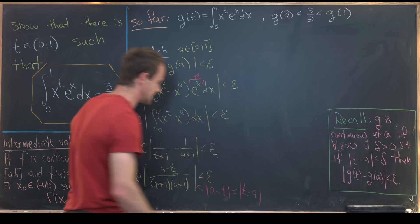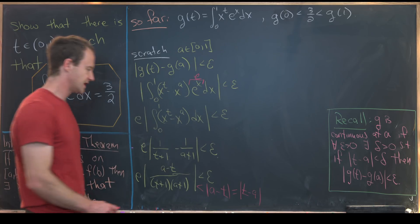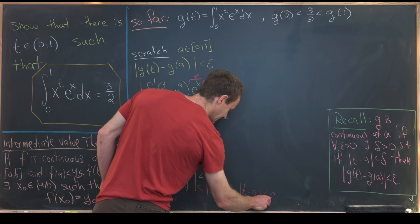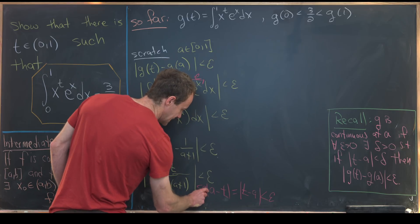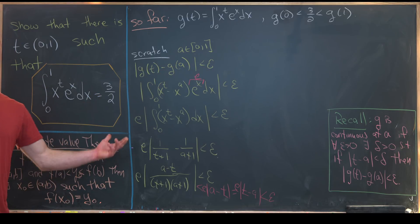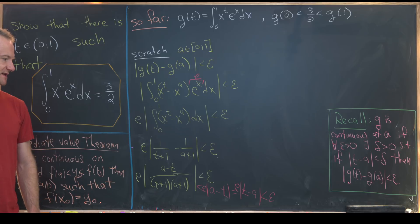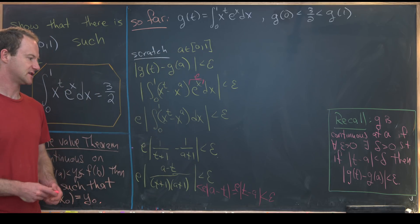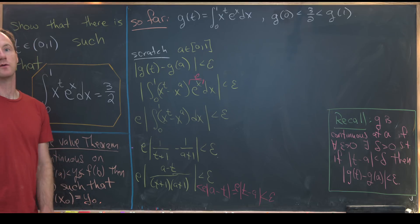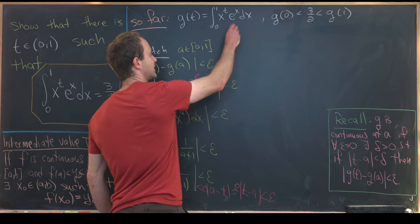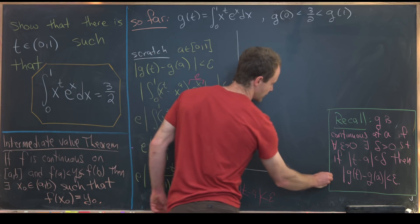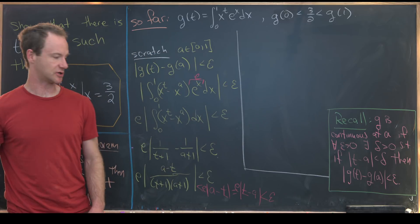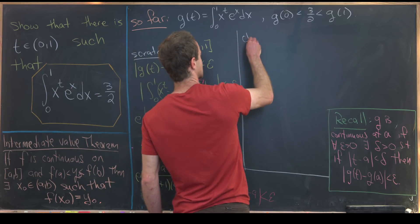So if we can make all of that less than epsilon, well I need an e here, then we're good to go. So what does that mean our delta will be? Well solving for this absolute value of t minus a, our delta will be epsilon over e. Okay, so now let's get to the careful proof that this is a continuous function. So maybe I'll write that as a claim.